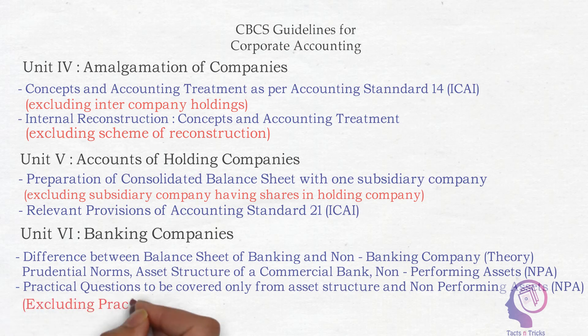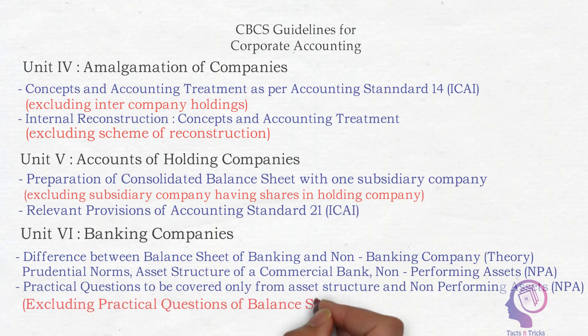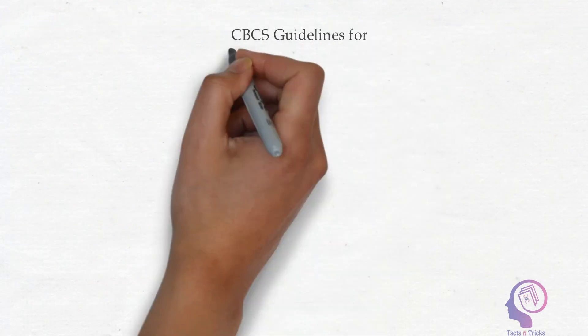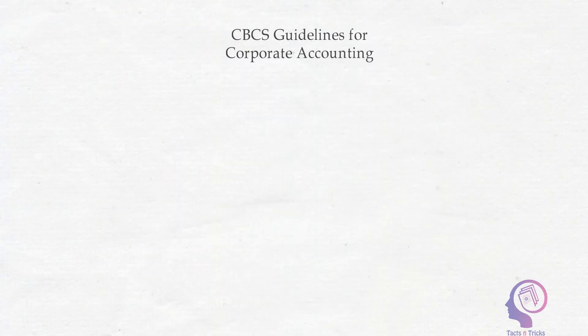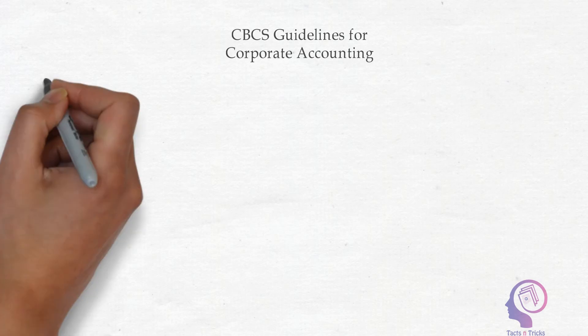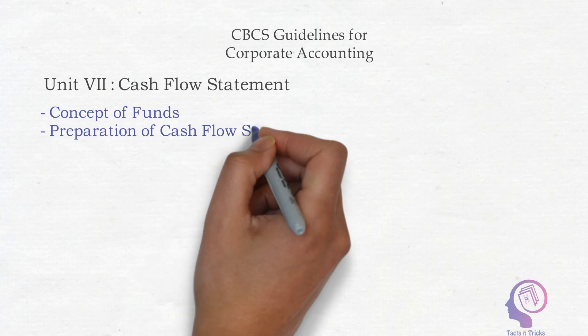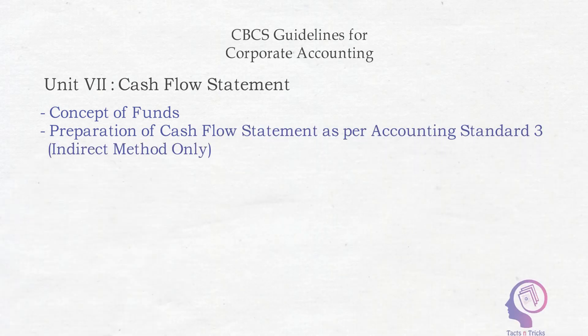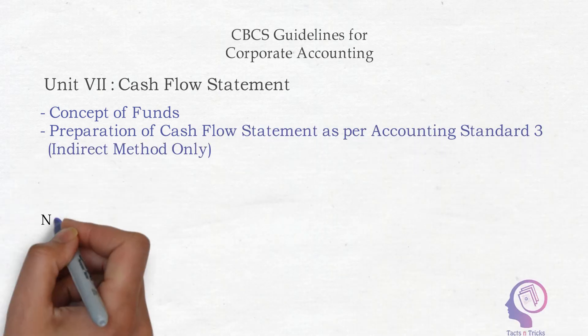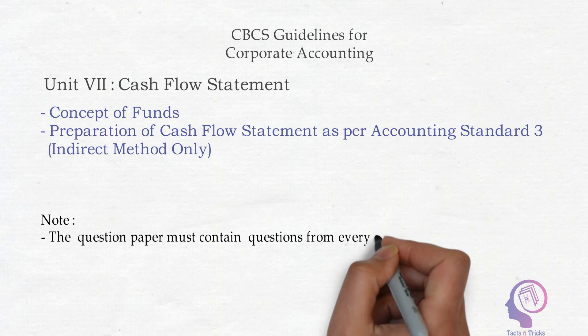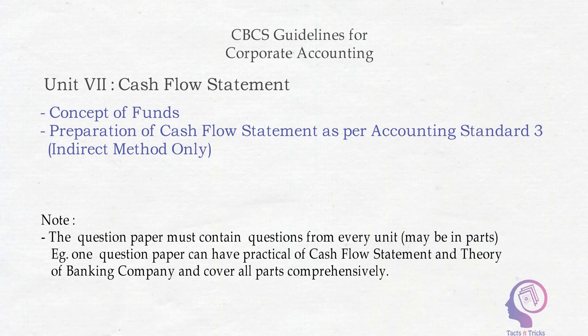For Unit 6, Banking Company, it can be either a theory or practical question from asset structure or NPA. The guideline for the last chapter, Unit — Cash Flow Statement, is that you have to study only the indirect method as per Accounting Standard 3, along with a small theory portion.